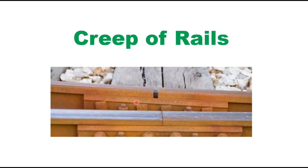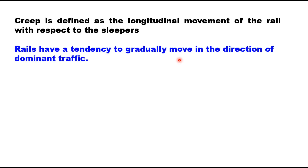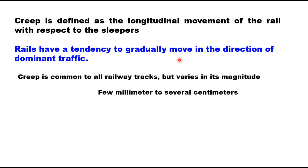Hello friends, today we will discuss creep of rails. Creep is the longitudinal movement of the rail with respect to sleepers. The rails have a tendency to move gradually in the direction of dominant traffic. Creep is common to all railway tracks but its magnitude varies considerably from place to place — in some cases just a few millimetres or even negligible, but at other places it may be as high as several centimetres in a month.